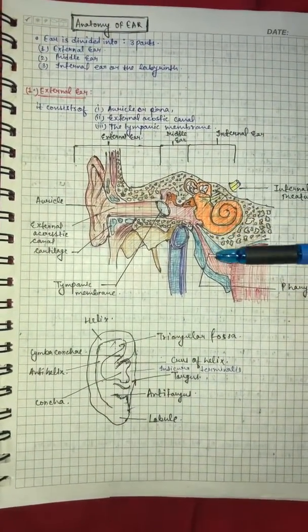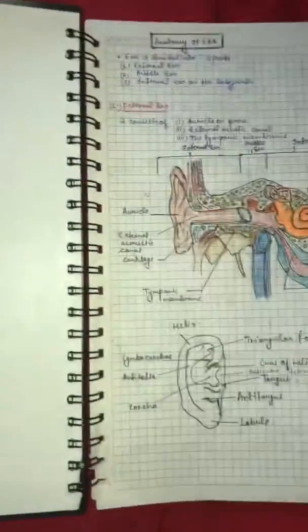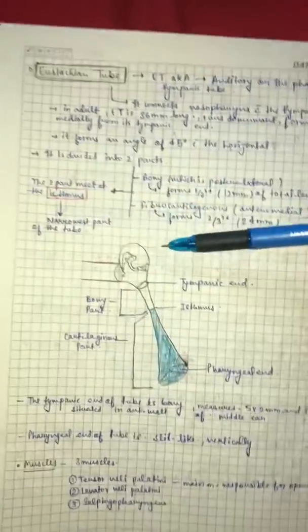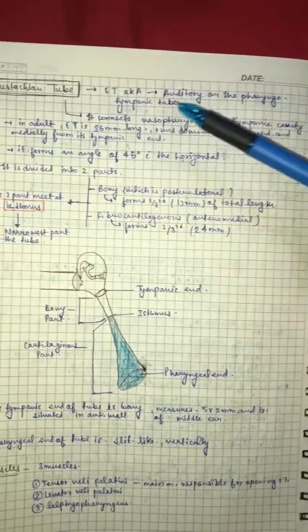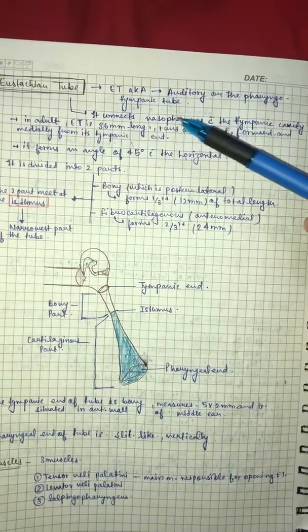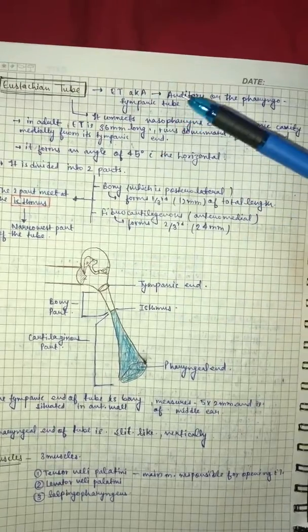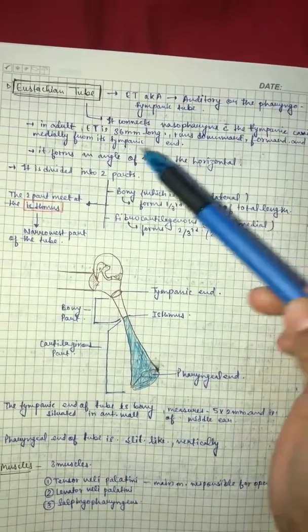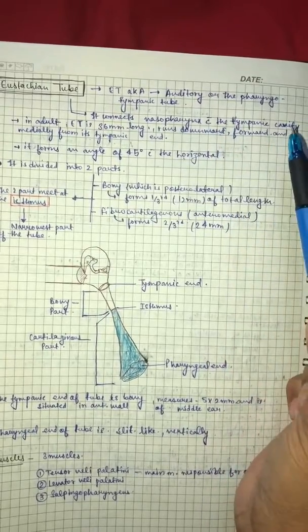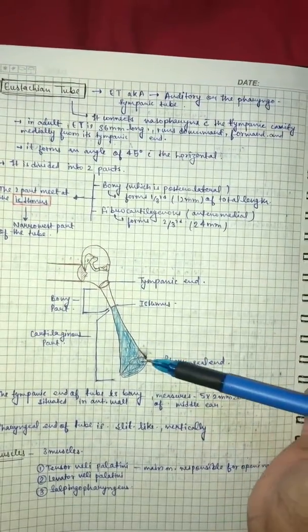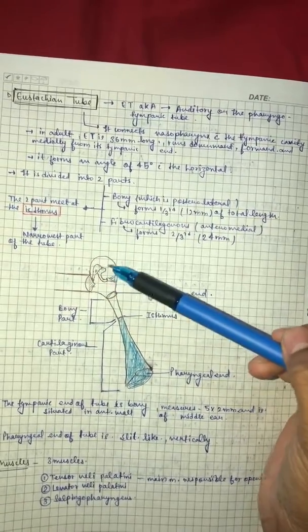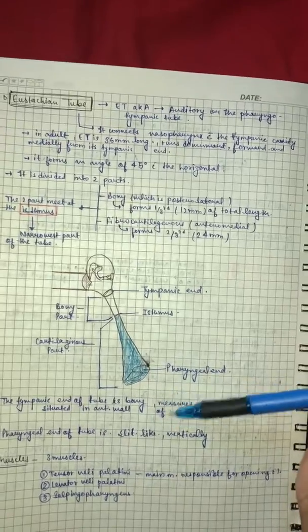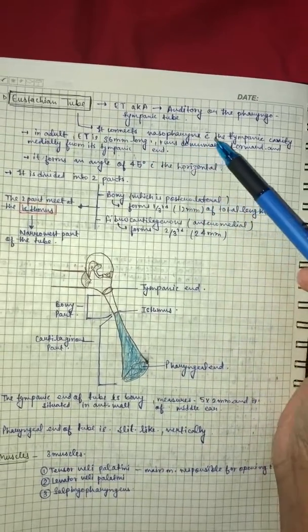It is continued in the pharynx. So now we will clearly see the structure of the Eustachian tube to be more exact. Eustachian tube, also known as auditory and pharyngotympanic tube. It connects nasopharynx with tympanic cavity.